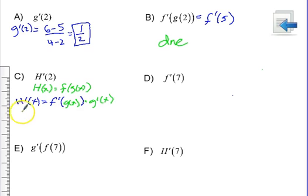Now, this derivative is taking place at the point x equals 2, so we have h prime of 2 is equal to f prime of g of 2 times g prime of 2.